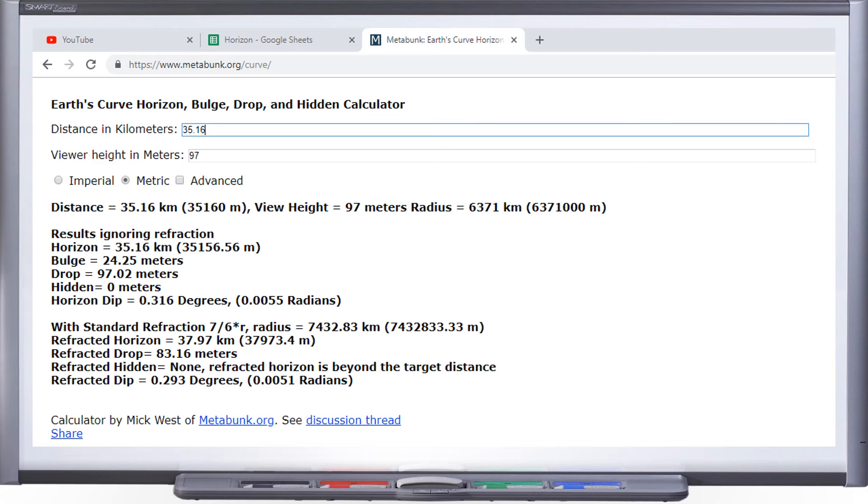So that was a lot of math I did. So I thought I'd go check Metabunk, see if they have the same answer. And for a 97 meter viewer height, I get 0.316 degrees. So we are in agreement on that. That's good news.